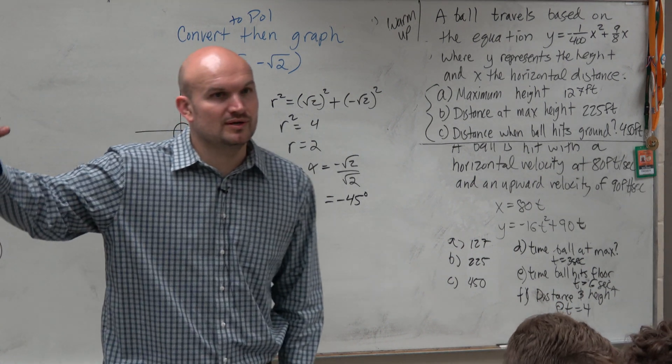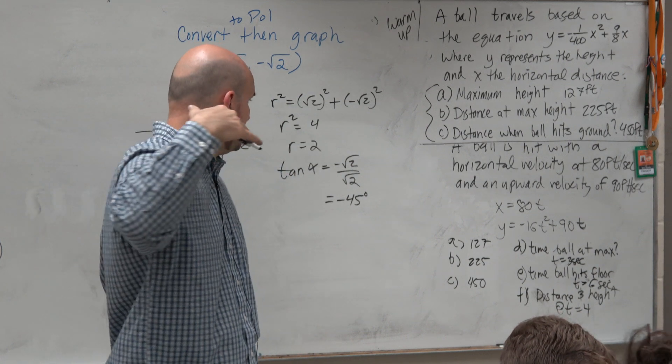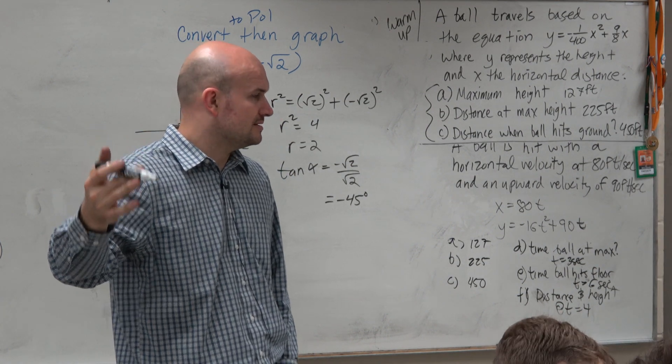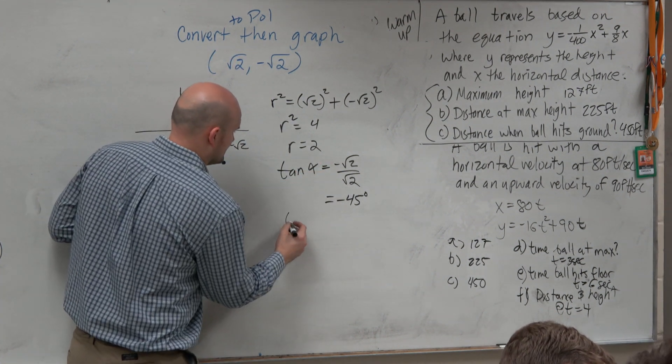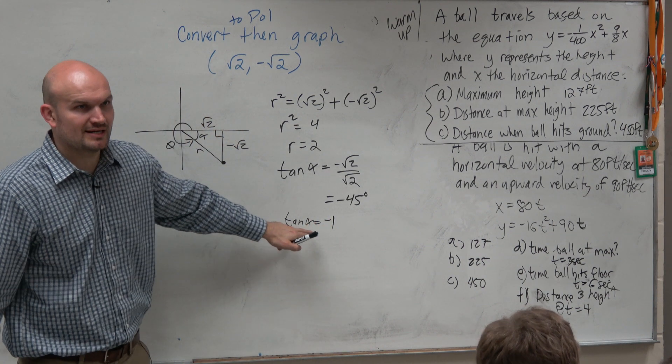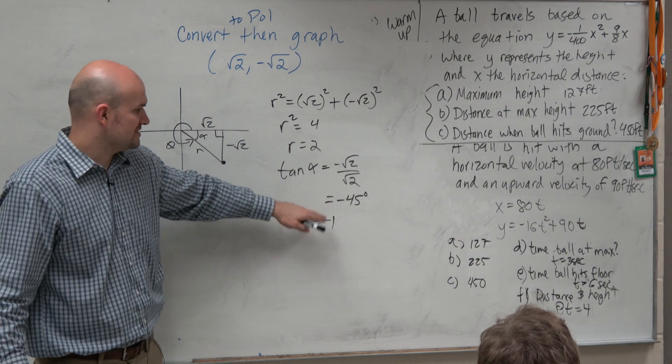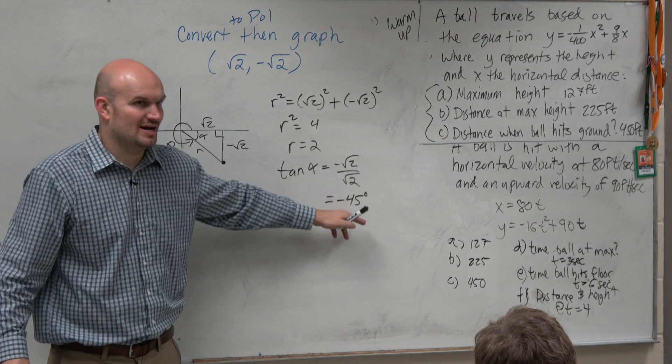If you do it in radian mode, it's going to give you a decimal that you probably won't recognize. So it's important for you guys to recognize that this is an angle that you guys know, hopefully. Like, you guys should hopefully recognize that what angle gives you negative 1 for a radian, which is equivalent to 45 degrees, pi over 4.